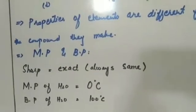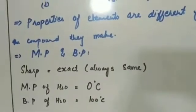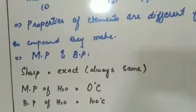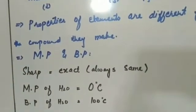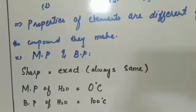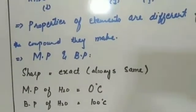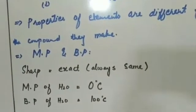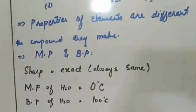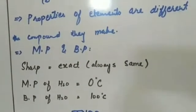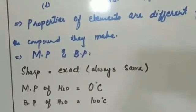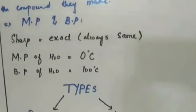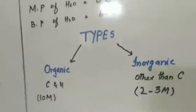Another important property is that compounds have sharp melting and boiling points. Sharp means exact — they will always have the same melting and boiling point. The melting point is the temperature at which a solid melts; the boiling point is the temperature at which a liquid starts boiling. The melting point of water is 0 degrees centigrade and the boiling point is 100 degrees centigrade, and it will always remain the same for pure water.